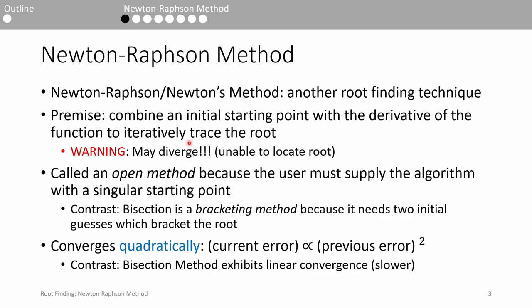Finally, Newton-Raphson exhibits quadratic convergence. That is, the error in the current iteration is proportional to the square of the error from the previous iteration. The number of significant figures of accuracy approximately doubles with each iteration. This is one of the major reasons why this method is so popular.